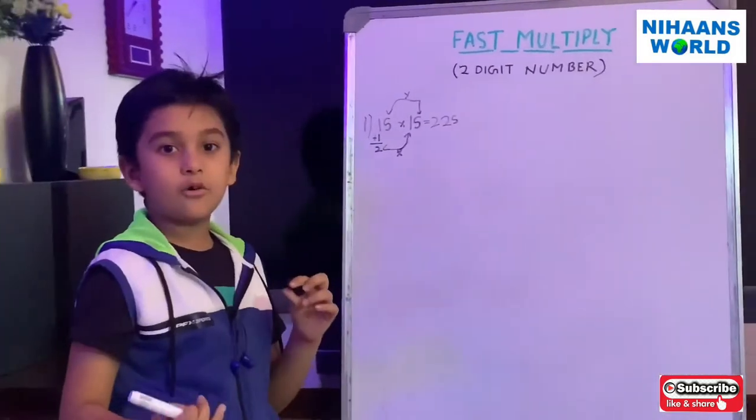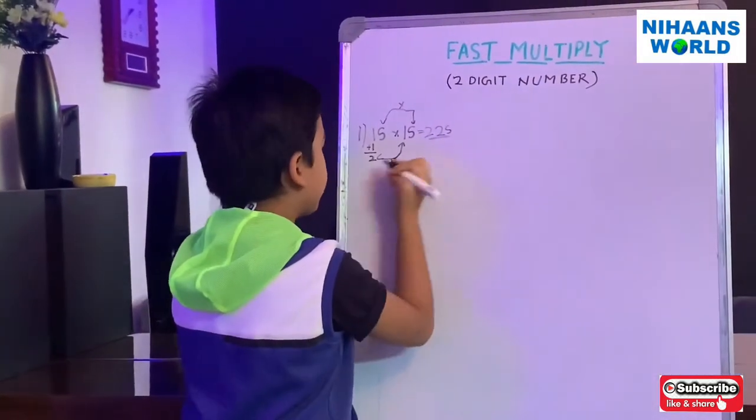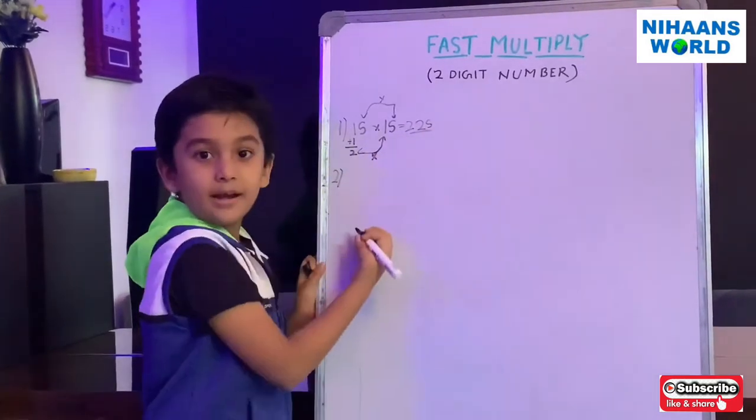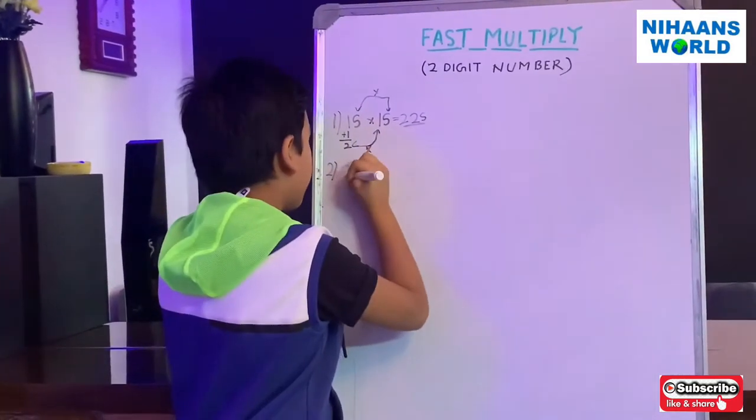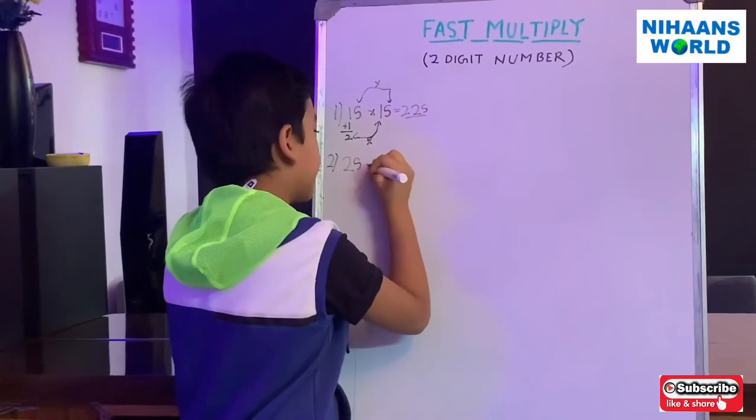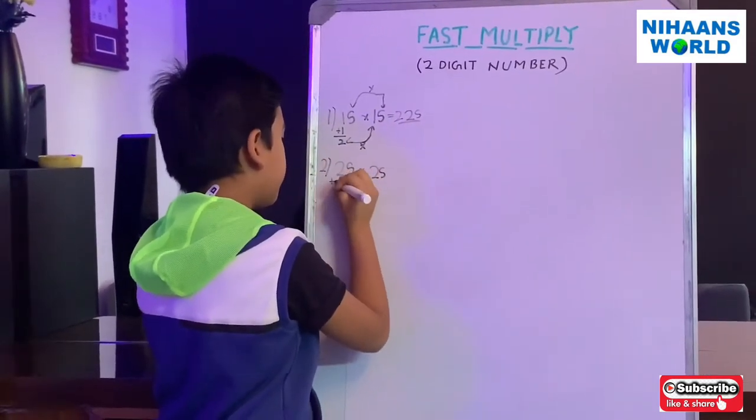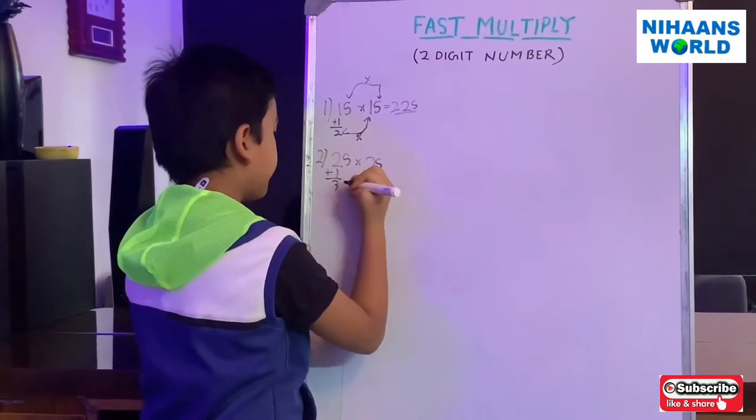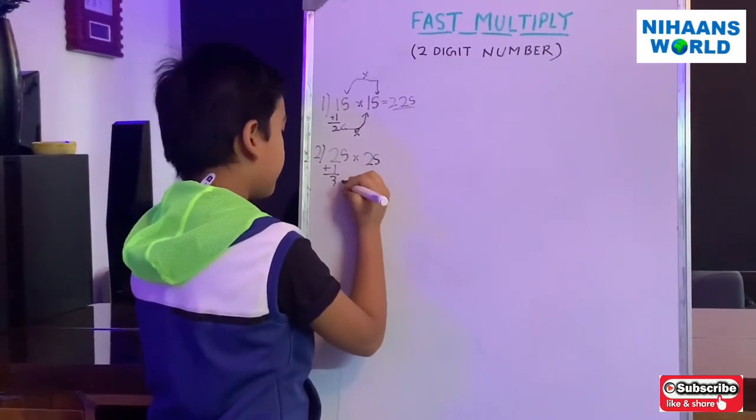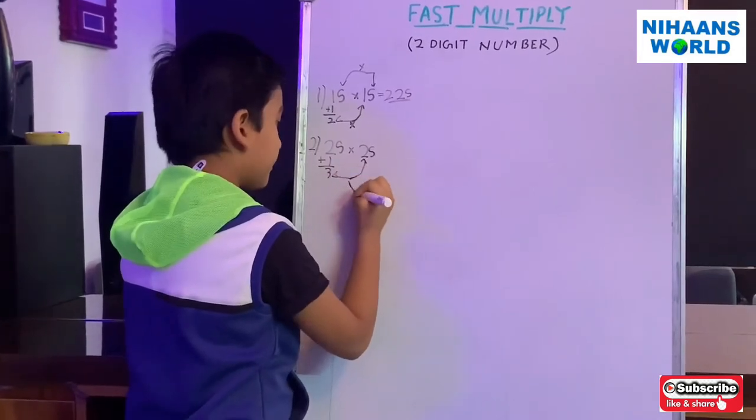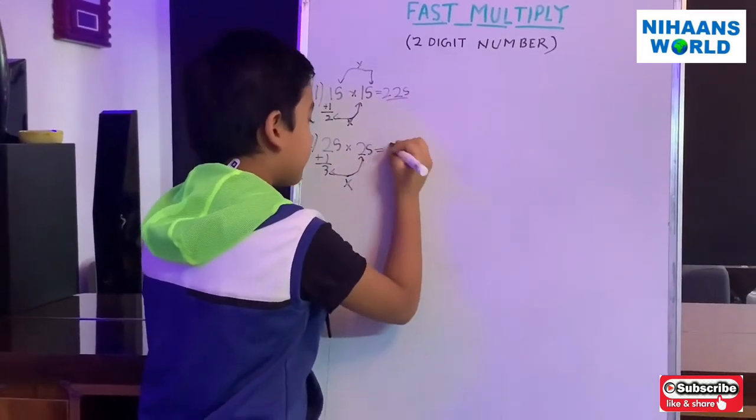So here we go to the second example. So the second example is 25 multiplied by 25. So 2 plus 1 is 3. So we have to multiply 3 multiplied by 2. So that is 6.